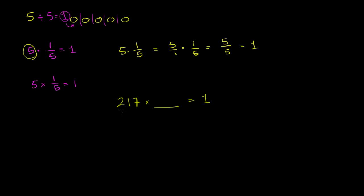well, you'd say, well, look, if I took 217 and I divided by 217, that would get me to one. And dividing by 217 is the exact same thing as multiplying by one over 217, multiplying by its multiplicative inverse,